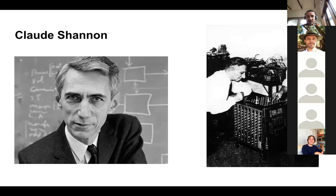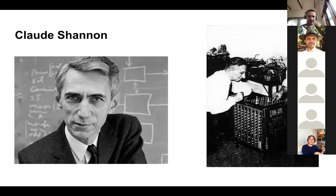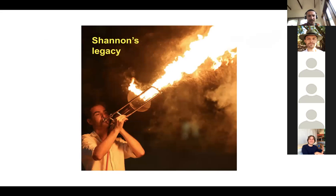Claude Shannon is generally regarded as the founding father of information theory. Both he and Turing were interested in how you formally and mathematically express information — and they apparently chatted in the Bell Labs lunchrooms, though they couldn't legally discuss their classified work. Shannon was quite an interesting figure: besides information theory, he worked on developing a chess-playing computer — a fanciful idea in 1949 that turned out to be very prescient — making him a genuinely forward-thinking, futuristic thinker.